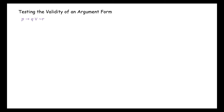First premise: if P, then Q or not R. Second premise: if Q, then P and R. Conclusion: therefore, if P, then R.